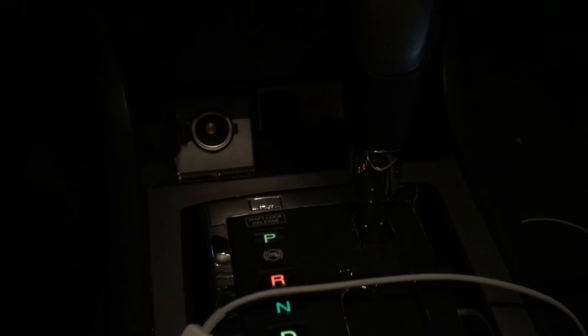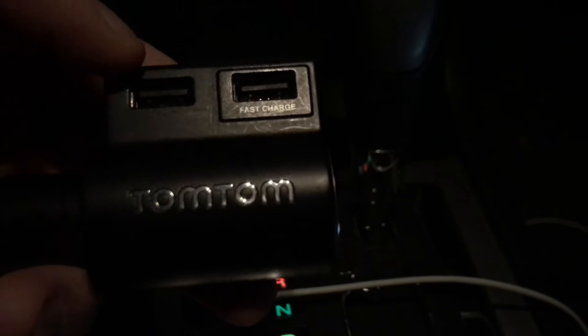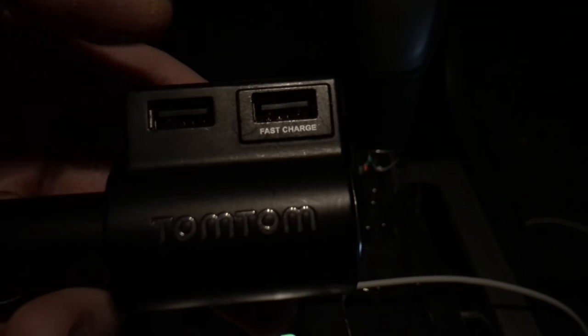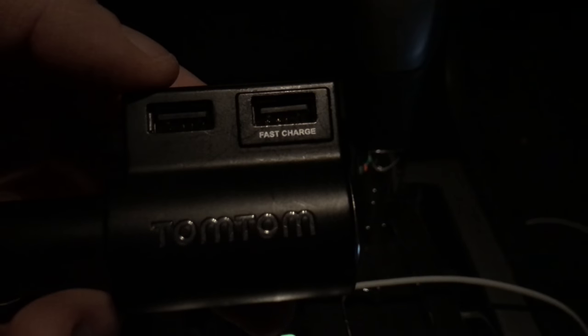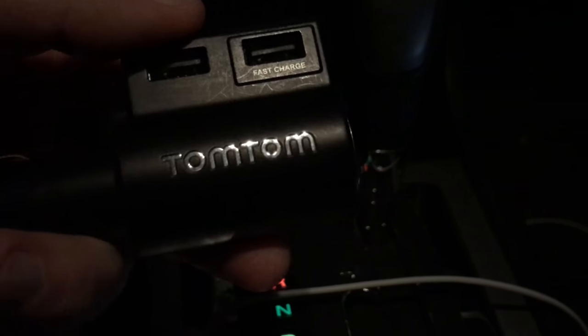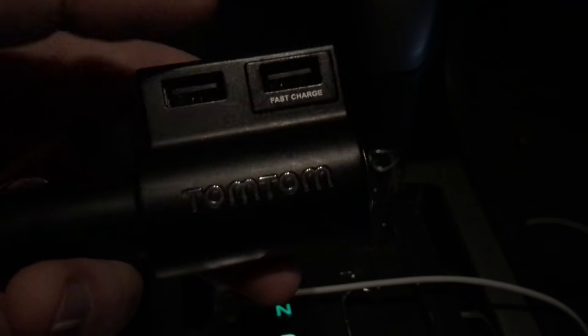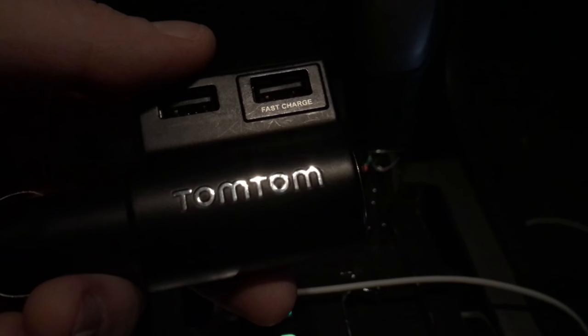So we're in the car now. As promised, here's the TomTom charger. This is how it looks like with the fast charge slot up there, where I plug in my phone. So while I drive, I can still listen to music via the FM transmitter and use navigation device like Waze, Google Maps or Apple Maps. And it still is fully charged, no problems at all, and it does not overheat. That's important as well.